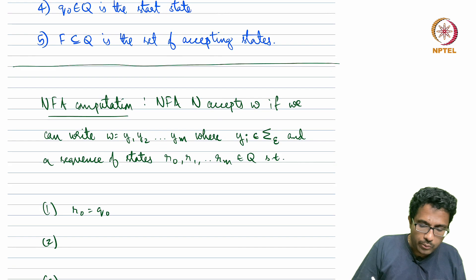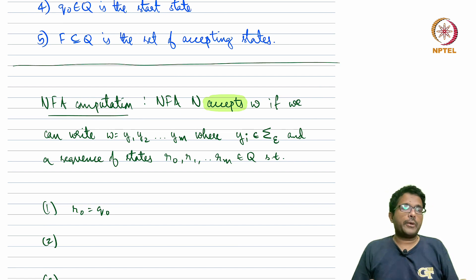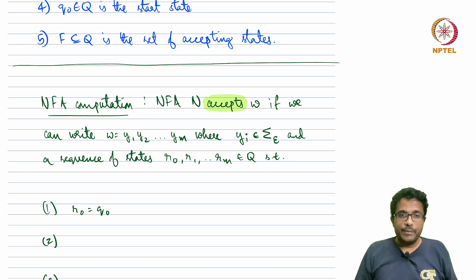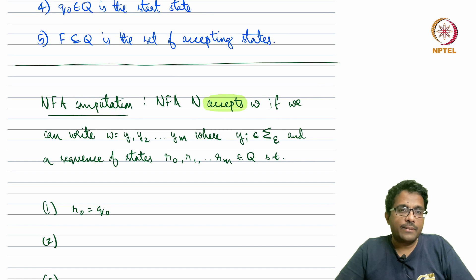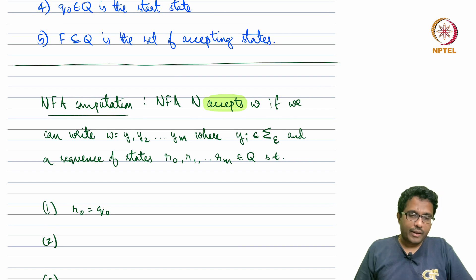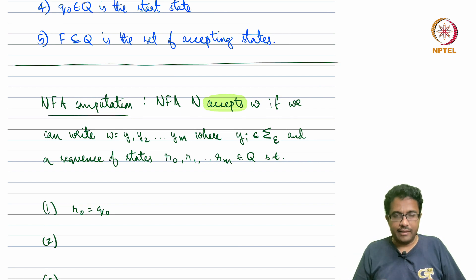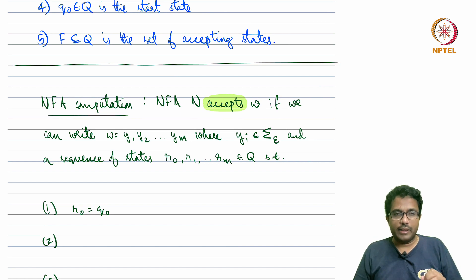Now we have to formally define what constitutes acceptance. In the case of DFA it was easy: there is only one way to process a string and at the end you check if you are at an accepting state. Now there are multiple ways, but as I have been repeatedly saying, you accept if there is one valid way to process that string leading to acceptance. The notational formalism is for completeness, but what matters most is a thorough understanding of what constitutes acceptance.